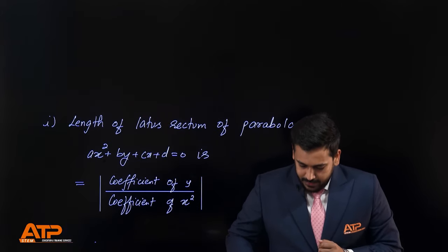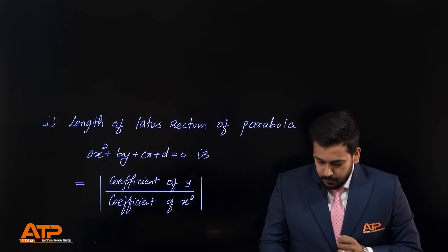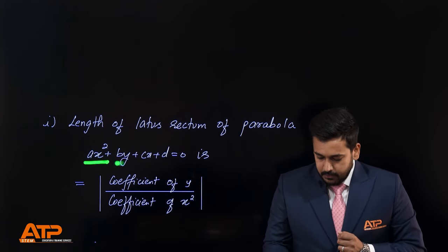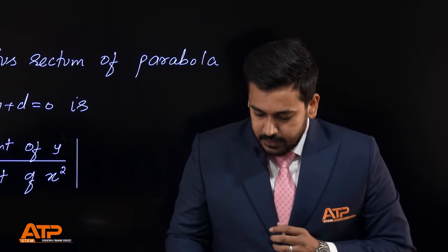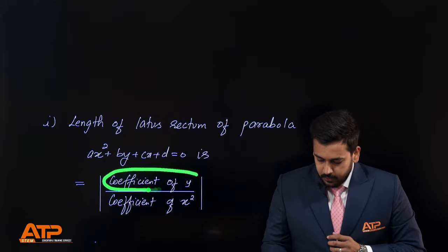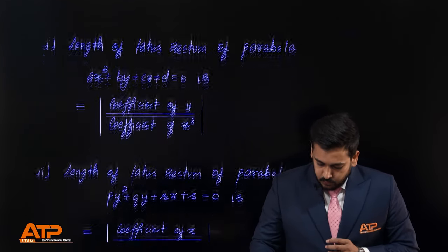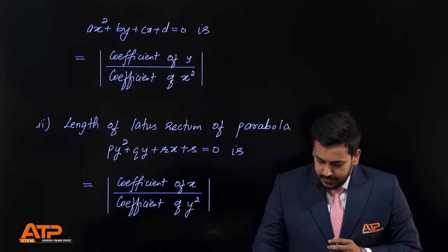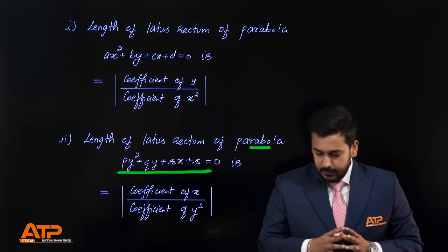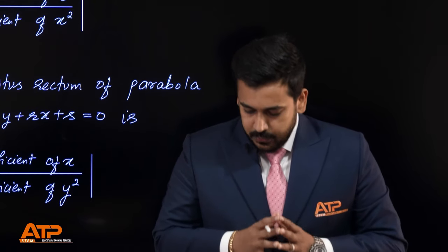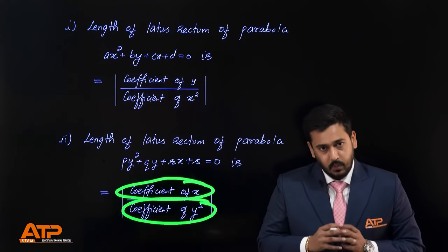If you want to find the length of the latus rectum of a parabola of the form ax² + by + cx + d = 0, then the length of the latus rectum will be the coefficient of y over the coefficient of x². For a parabola of the form py² + qy + rx + s = 0, it will be the coefficient of x over the coefficient of y².